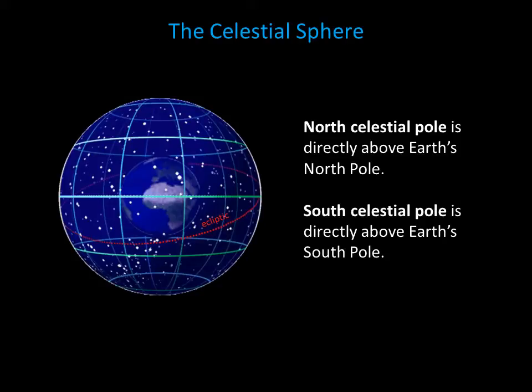We need to first define two points and two circles on the celestial sphere. Imagine projecting a point directly above the North Pole onto the celestial sphere — this point is called the North Celestial Pole. Now imagine doing the same thing over Earth's South Pole; this point is the South Celestial Pole.